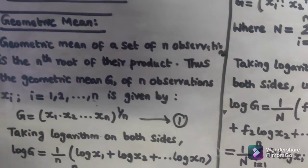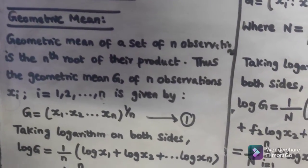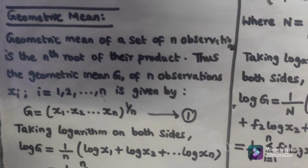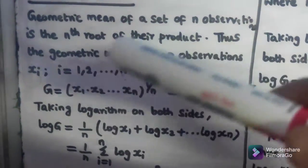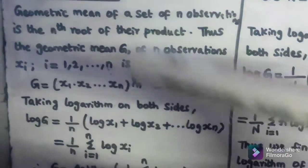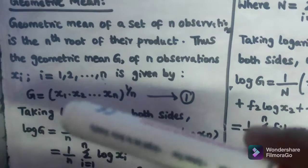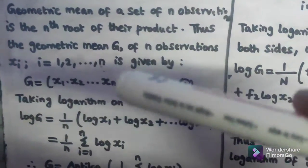Geometric mean of a set of n observations is the nth root of their product. Thus the geometric mean G of n observations xi, i = 1, 2, ..., n is given by G = (x1 · x2 · x3 ... xn)^(1/n). This is the first equation.